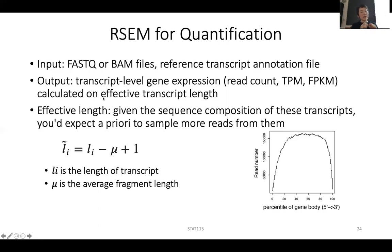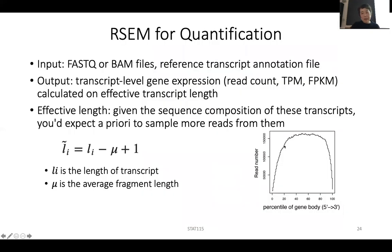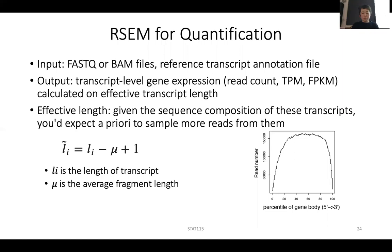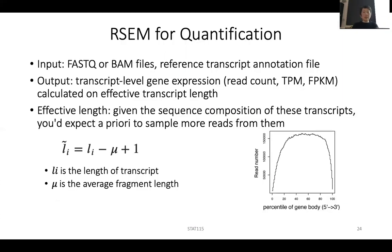This is calculated on the effective transcript length, which is not the full length of the whole transcript. When you look at how reads cover genes, the beginning and end very often don't have very good coverage. So for a very short gene, the region that can be covered is much shorter. The effective length is calculated as the transcript length minus the average fragment length plus one, which normalizes out the ends a bit. So when you normalize by length, you use the effective length of the transcript.